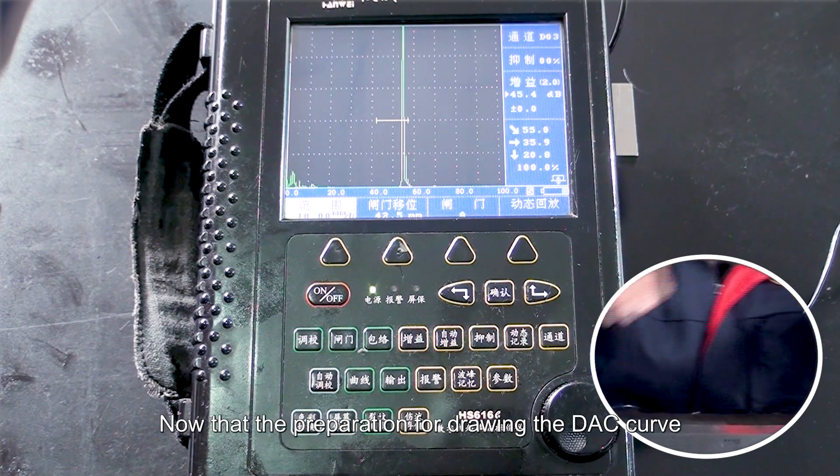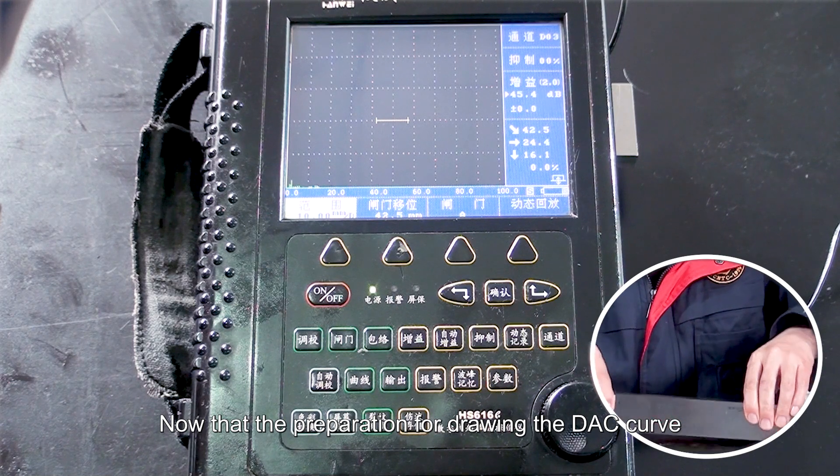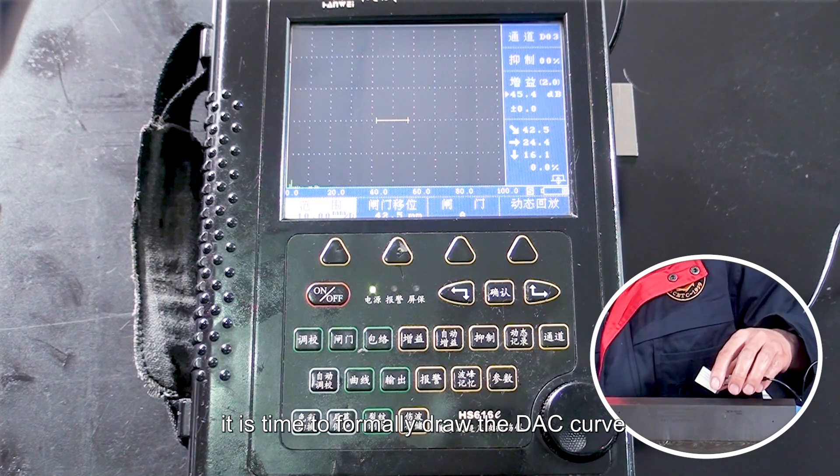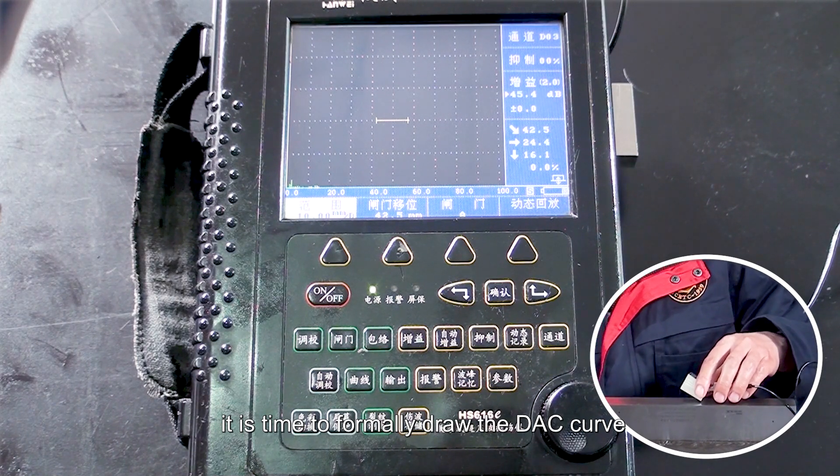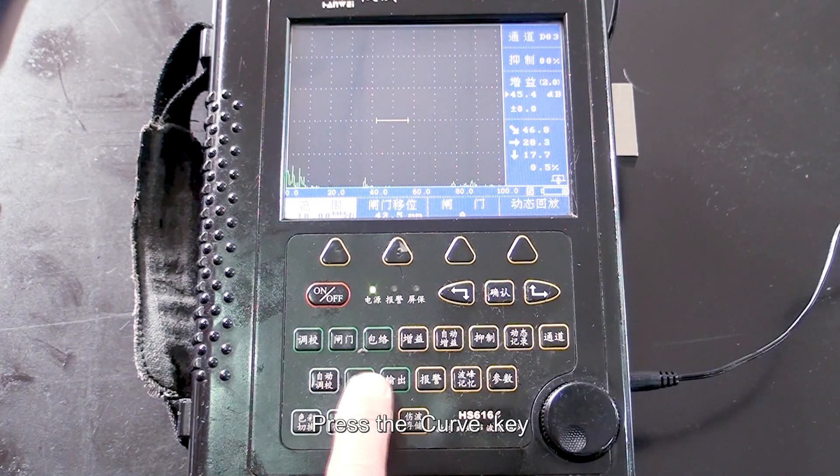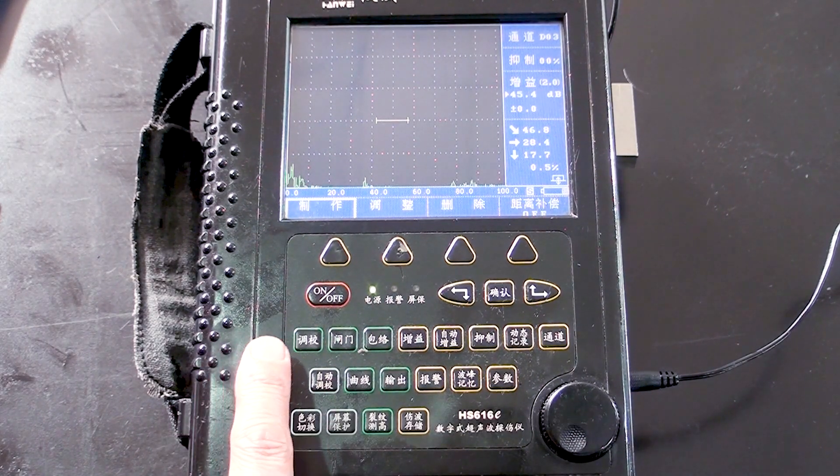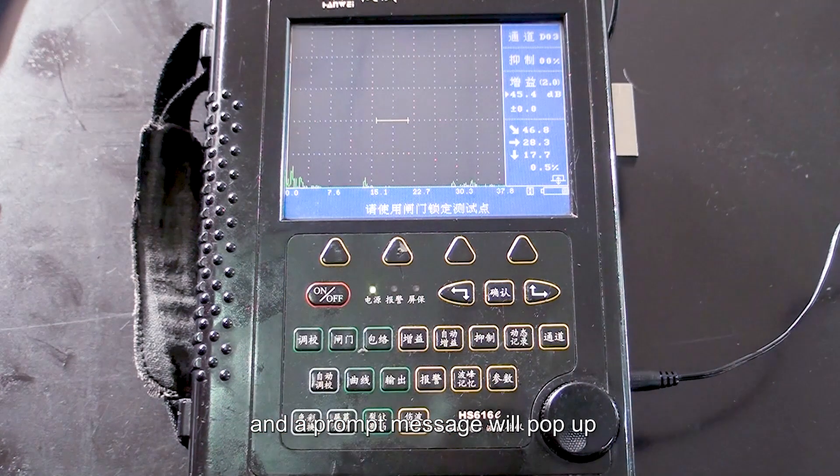Now that the preparation for drawing the DAC curve is completed, it is time to formally draw the DAC curve. Press the curve key, select Make Function menu, and a prompt message will pop up.